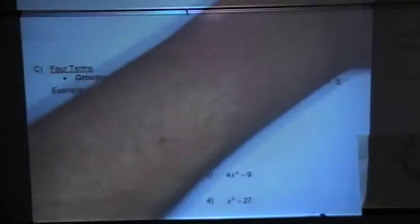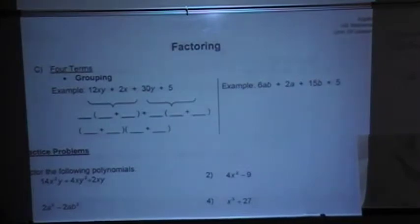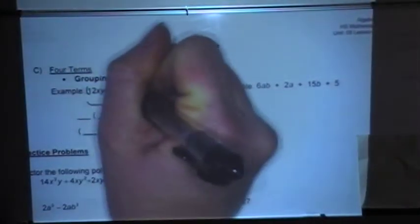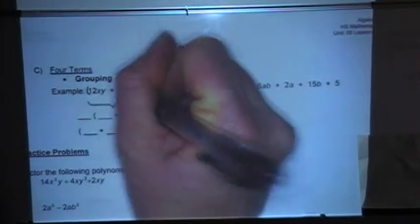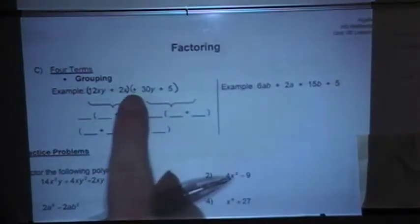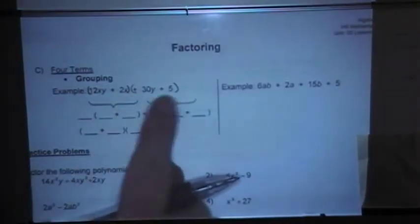That is the only way to factor something that has four terms. Now, it's called factoring by grouping because the first thing you're going to do is group the first two terms and the last two. When you group the last two, go ahead and include that sign with the last set.